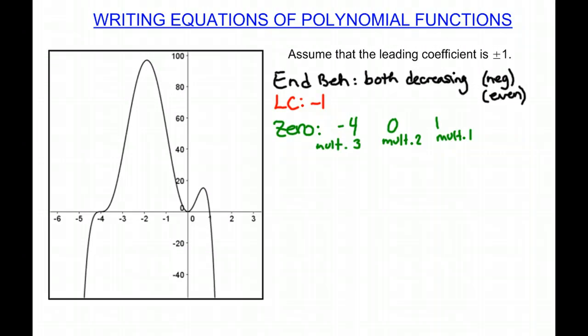So now we want to write the function f(x) equals, again, we know that it is a negative 1. And then we have x plus 4. Why do we have plus 4? Well, it's because when x is negative 4, the parentheses will be 0. So then we take the opposite sign, so x plus 4, multiplicity of 3, so it will be cubed. Then we have x plus or minus 0, doesn't work out, and then that's squared.